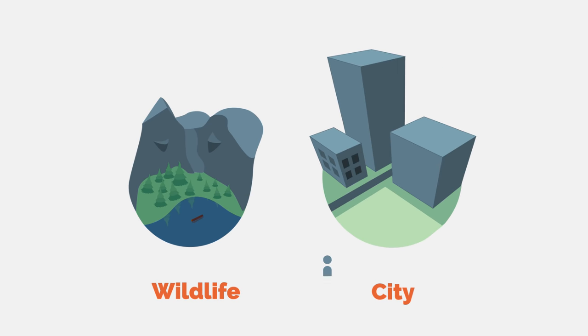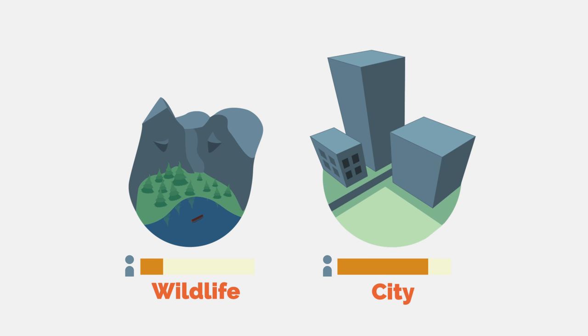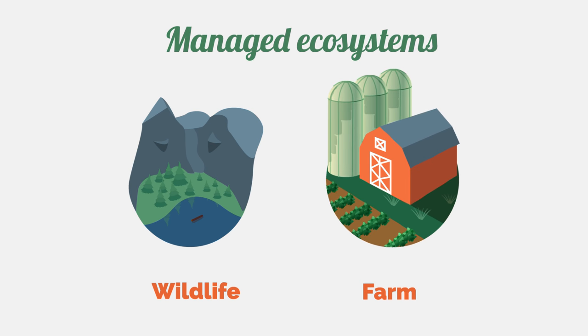All ecosystems are considered to be either wild or managed based on the amount of human influence in an ecosystem. Wild ecosystems are mostly free of man's influence and tend to be places like old growth forests and wildlife preserves. In contrast, managed ecosystems are actively modified by humans, like parks in the middle of a city and farms.